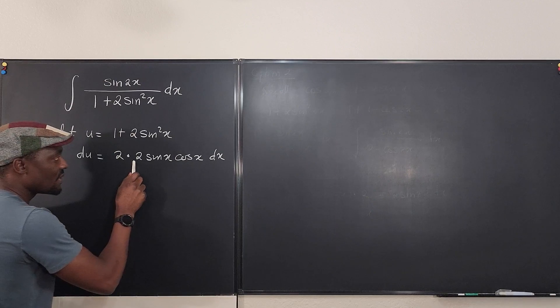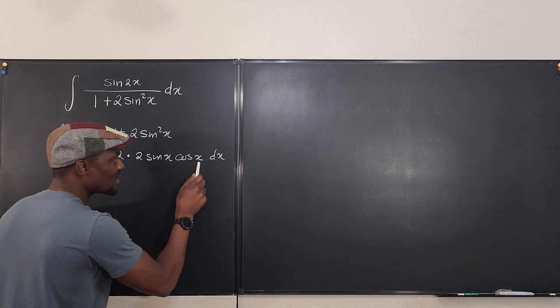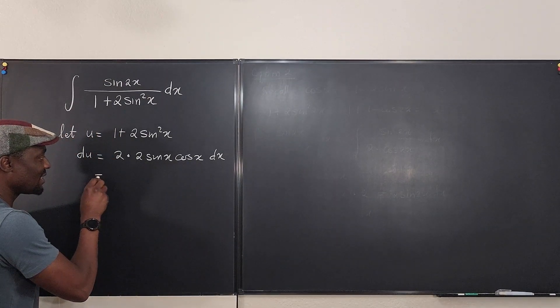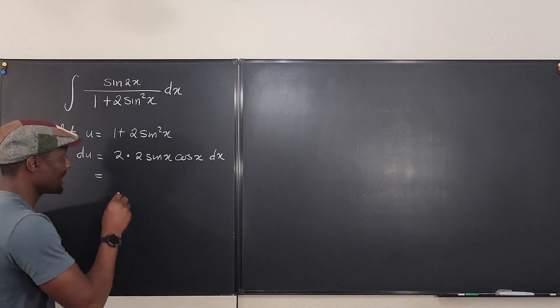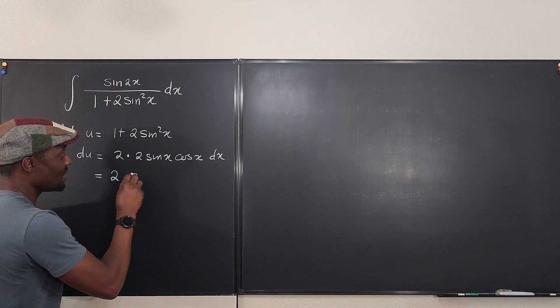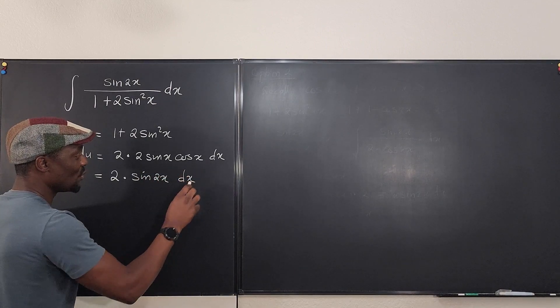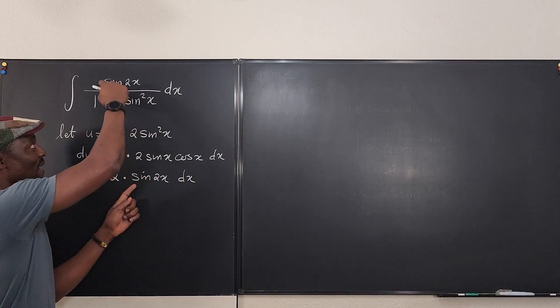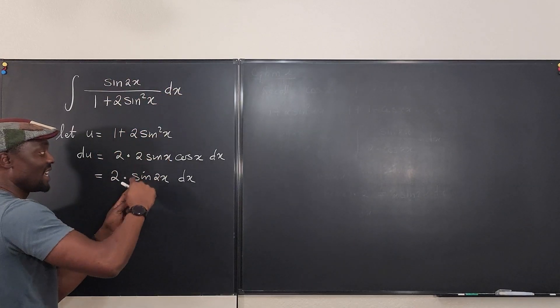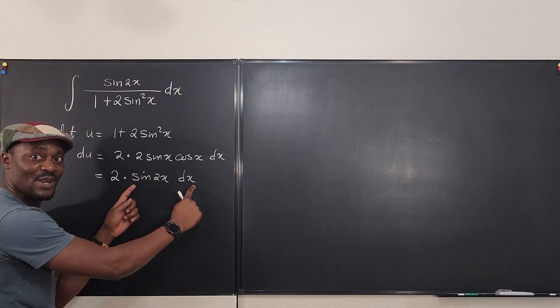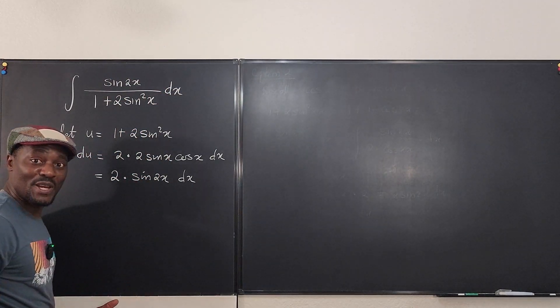But I know that this 2 sine x cosine x is the same thing from my trig class as 2 times sine 2x. So you see that the sine 2x I was looking for, dx, is sitting right here. So it means I didn't have to do any modification.